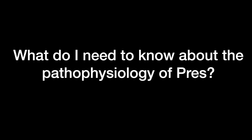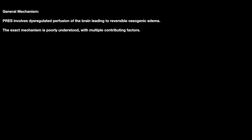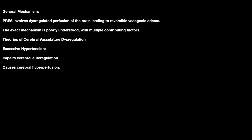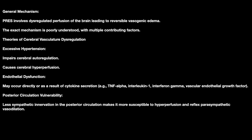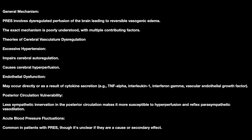Regarding pathophysiology: PRES involves dysregulated perfusion of the brain leading to reversible vasogenic edema. The exact mechanism is poorly understood with multiple contributing factors. Theories for cerebral vasculature dysregulation include excessive hypertension causing impaired cerebral autoregulation and cerebral hyperperfusion, endothelial dysfunction occurring directly or as a result of cytokine secretion, and posterior circulation vulnerability due to less sympathetic innervation, making it more susceptible to hyperperfusion and reflex parasympathetic vasodilation. Acute blood pressure fluctuations are common but whether they are a cause or effect of PRES remains unclear.